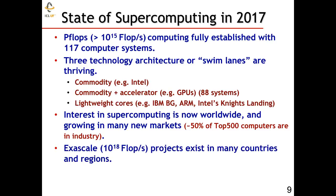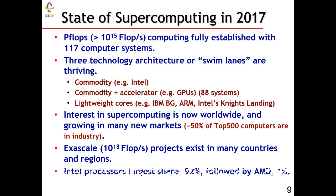Today, we're looking at extending the range of computing and going to exascale computing — that's 10 to the 18, or a billion billion floating-point operations per second. We see projects in many countries exploring ways to get to that exascale level. If we look at the 500 fastest computers and what processors they're using today, we see this incredible situation where Intel processors are used in 92% of those 500 computers.